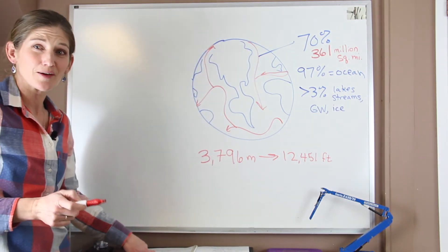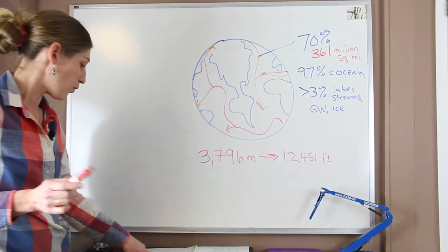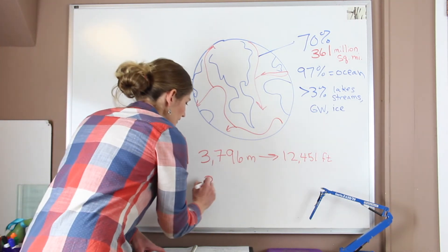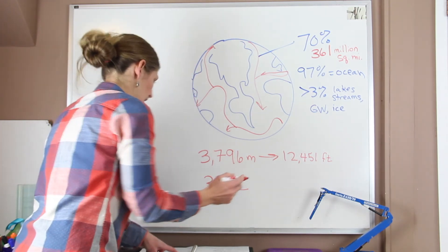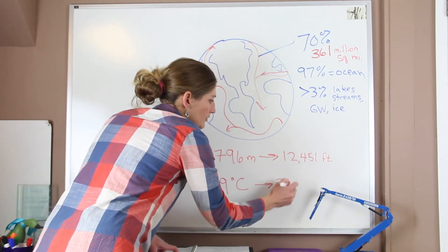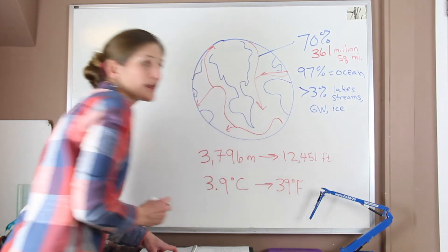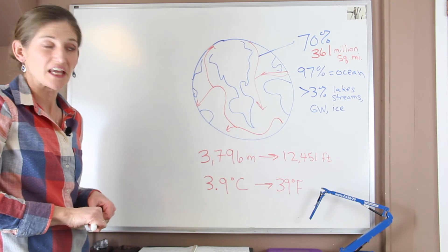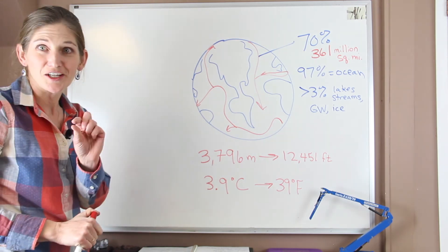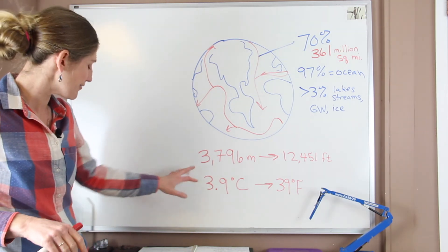And the average temperature of the ocean is actually quite cold. The average temperature is 3.9 degrees Celsius, which is 39 degrees Fahrenheit. Pretty chilly. So remember that the next time you go on your tropical vacation, that that's just kind of an outlier for the average of the ocean.